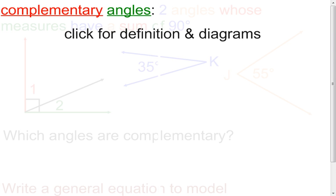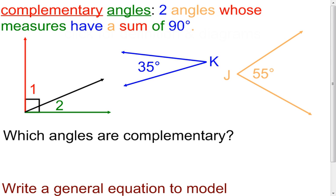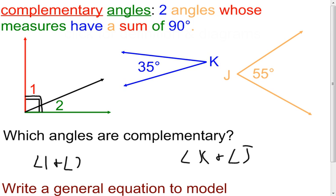Complementary angles — these are the ones that say nice things about each other. A little math humor there. Complementary angles are two angles whose measures have a sum of 90 degrees. We look at the measures of the two angles and add them. If it's 90 degrees, they're complementary. For angle K and angle J: 35 plus 55 equals 90 degrees, so angle K and angle J are complementary. For angle one and angle two, the right angle symbol is shown, so the red ray and green ray together make 90 degrees, meaning angle one and angle two together are also 90 degrees and are complementary angles.